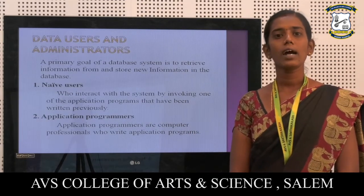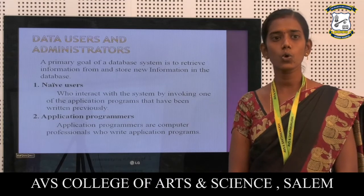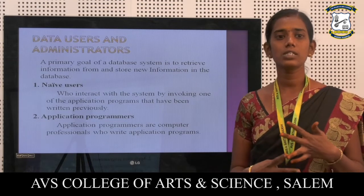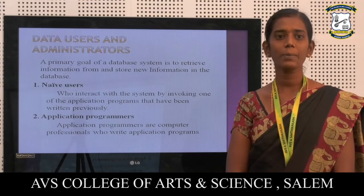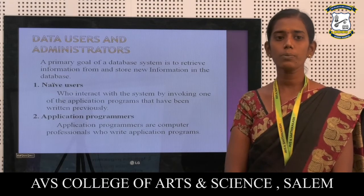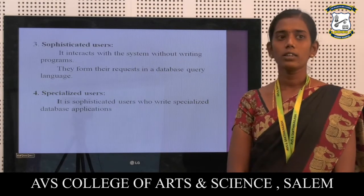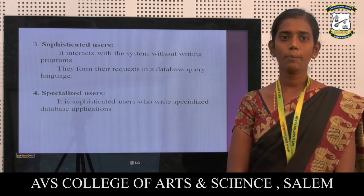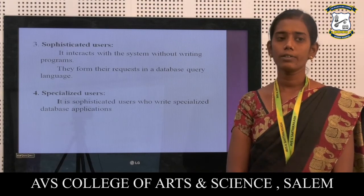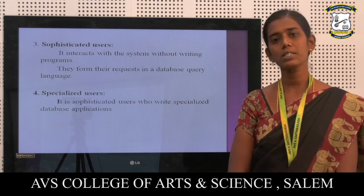Data users and administrators. A primary goal of a database system is to retrieve information from and store new information in the database. There are two types. First one, naive users, who interact with the system by invoking one of the application programs that have been written. Second one, application programmers, or computer professionals who write application programs. Third one, sophisticated users, who interact with the system without writing programs; they form their requests in database query languages. Fourth, specialized users, who write specialist database applications.